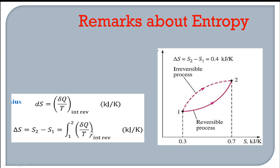Rather than defining entropy at a specific point, we are usually interested in the change in entropy: ΔS or S₂ − S₁, designated as dS or ΔS — the change in entropy during a process. On a T-S diagram showing both reversible and irreversible processes from state 1 to state 2, for example ΔS = 0.7 − 0.3 = 0.4.